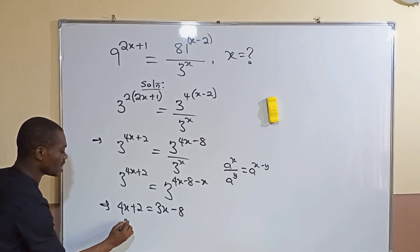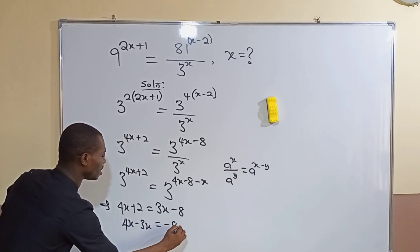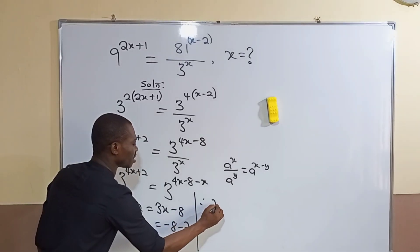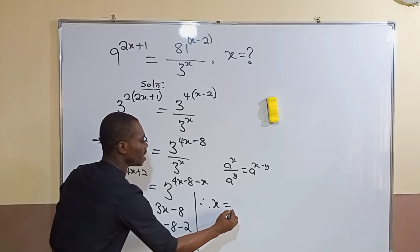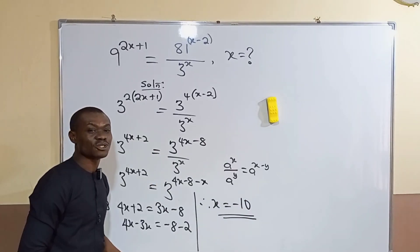If 3x comes here, I will have 4x minus 3x equals minus 8 minus 2, and that is going to give me 4x minus 3x is x, and minus 8 minus 2 is minus 10. So x equals minus 10.